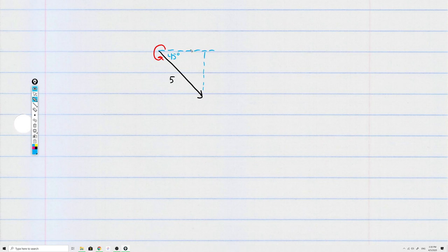So I can say this adjacent side, okay, the adjacent side is 5 times the cosine of 45 degrees. And this is the opposite side. I can say that this opposite side is 5 times the sine of 45 degrees.